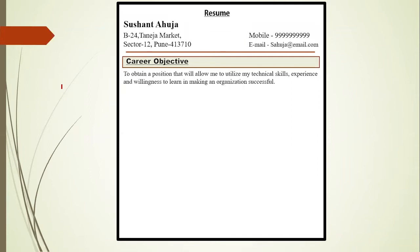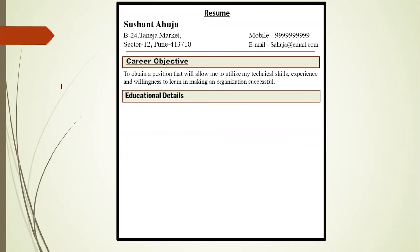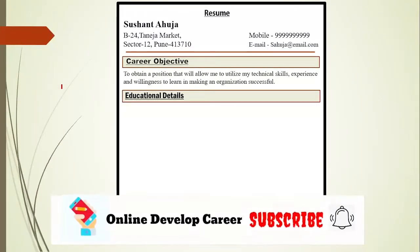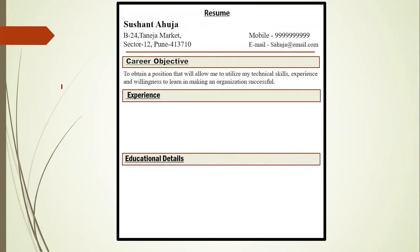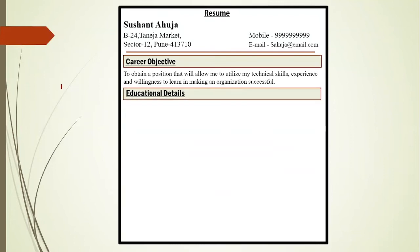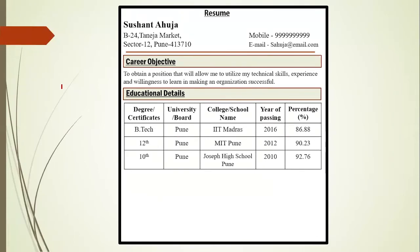After career objective, we should add educational details. But if you are an experienced candidate, the recruiter wants to know your experience — what you have done in your project and your last job — which is more important than educational details. So you can write experience first, then educational details. But if you are a fresher, just go with the educational details. You can write educational details in tabular form or in the form of bullets — that's completely your choice.